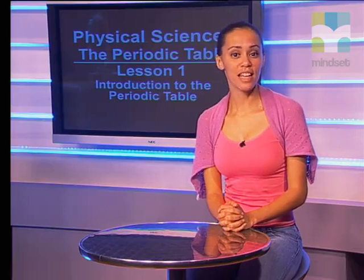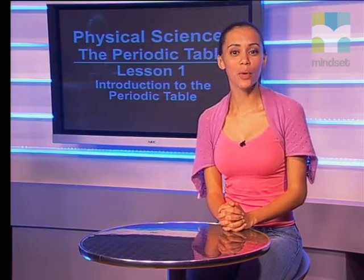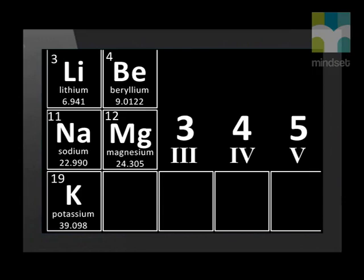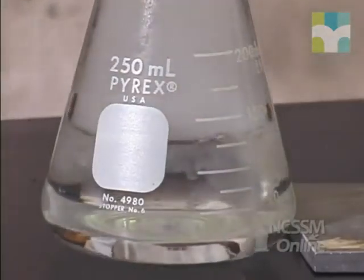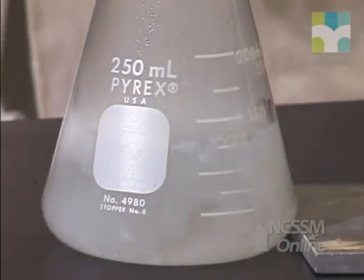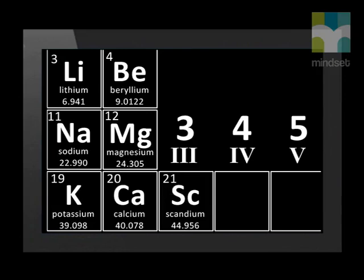We need to know at least the first 36 elements on the periodic table as well as a few others that are often used. The first element in the next row is potassium, represented by the capital letter K — this comes from the Latin kalium — with atomic number 19. Next we have calcium, symbol capital C, lowercase a, with atomic number 20. Calcium is a soft silvery-grey metal that reacts very rapidly with water, giving off lots of heat. This is followed by scandium (capital S, lowercase c, atomic number 21) and titanium (capital T, lowercase i, atomic number 22).